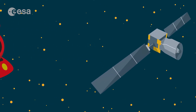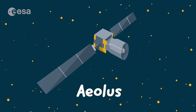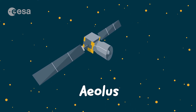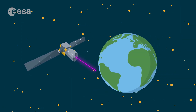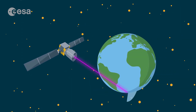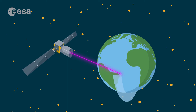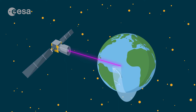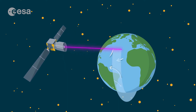We can measure winds from space using satellites like Aeolus, the first one that directly studied the air that moves. It used a laser that sent out bright light to do this.